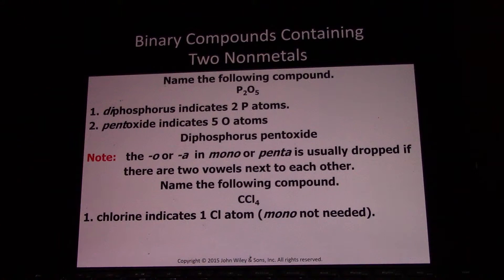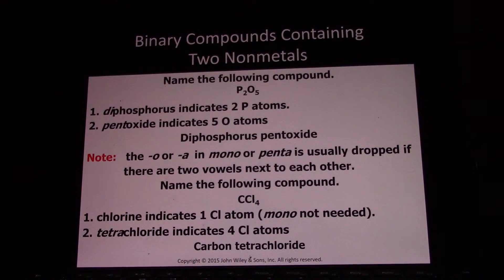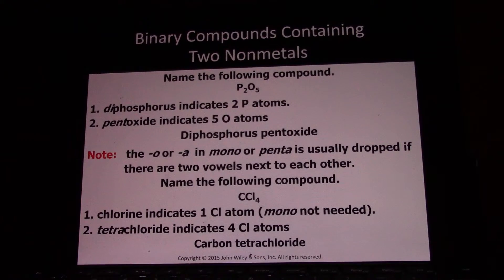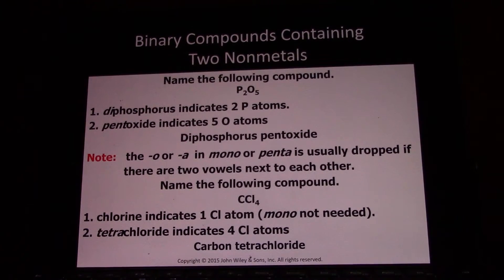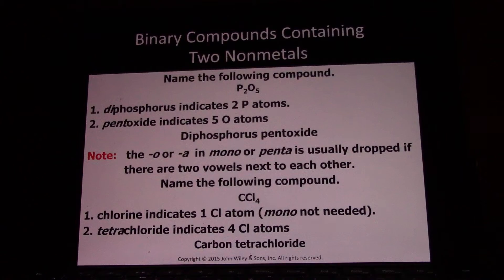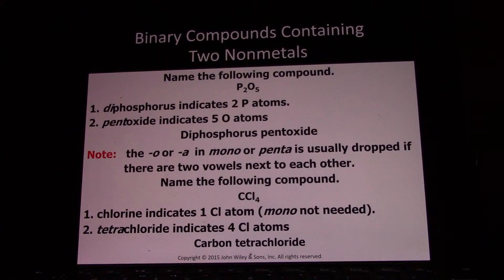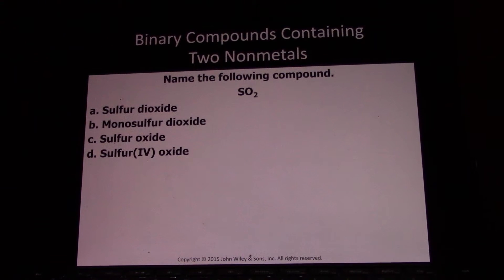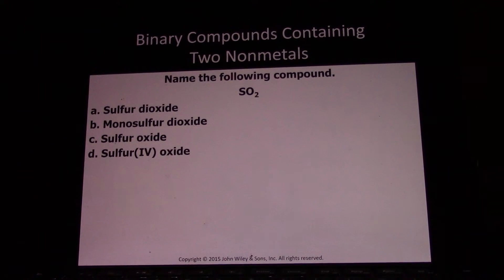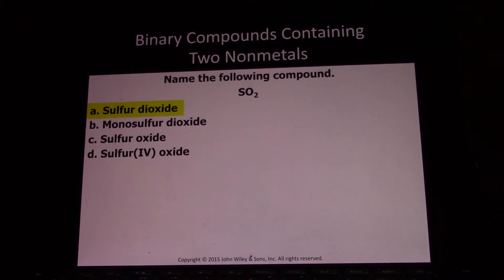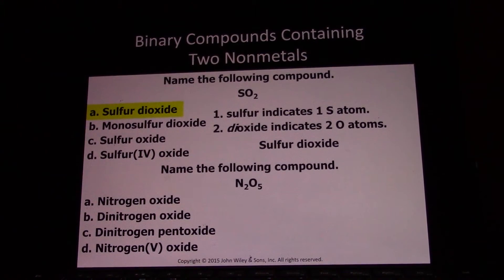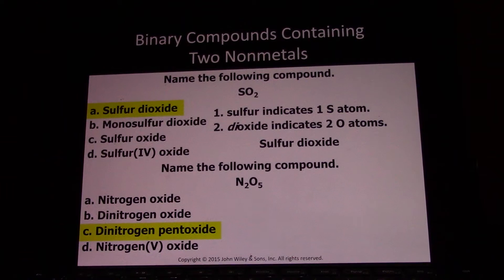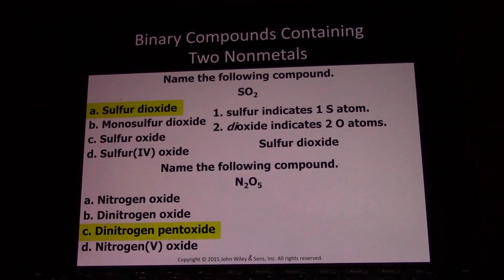CCl4 has one carbon and four chlorines — carbon tetrachloride. Again, you omit the first mono because there's only one of the first element. Carbon tetrachloride was a great solvent, but it causes cancer so we don't use it anymore. SO2 is sulfur dioxide. N2O5 is dinitrogen pentoxide — two nitrogens, five oxygens.